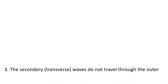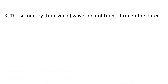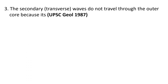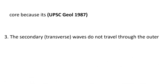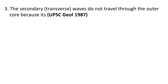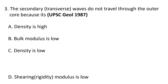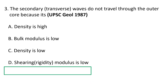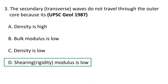Third question: secondary waves, also known as transverse waves, do not travel through the outer core. Why? Choices are: a) density is high, b) bulk modulus is low, c) density is low, and d) shearing or rigidity modulus is low. The correct answer is d) shearing or rigidity modulus is low.